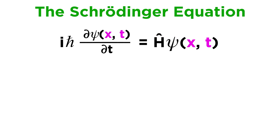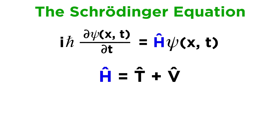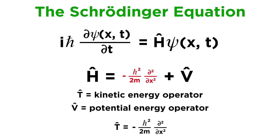We will now be more precise in having ψ depend on both position and time. The only thing in this equation that remains unfamiliar at this point is the Hamiltonian operator. The Hamiltonian operator has two components: a kinetic energy operator T, and a potential energy operator V, and the Hamiltonian is the sum of these two operators. We defined the kinetic energy operator in the previous tutorial and found it equivalent to negative h-bar squared over 2m times a second partial derivative with respect to x, so let's make that substitution now.